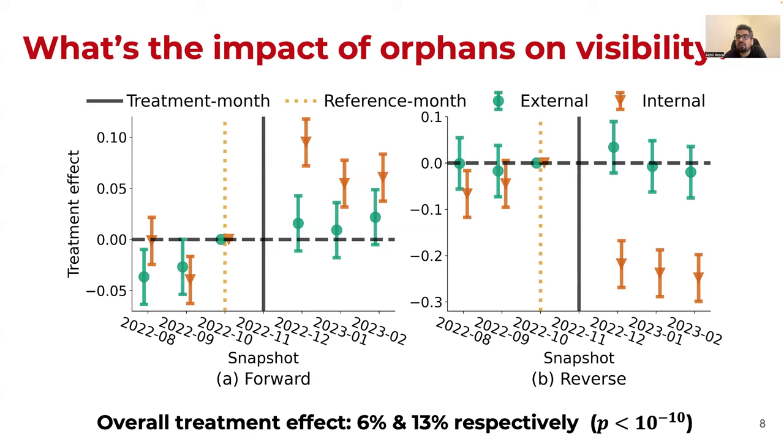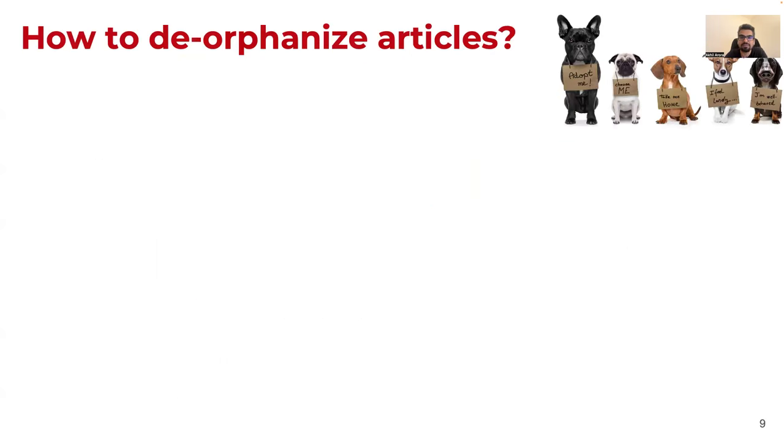Moving further, we also stratified the page views by the referrer, or actually broke down the traffic that is received by external versus internal hyperlinks. And we also verified that the treatment effects are driven primarily by the internal links or the link that was added or that was taken away.